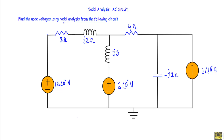To find node voltages using nodal analysis, we first identify the total number of nodes. We have three nodes total: node number one, node number two, and the ground, which is another node. When using nodal analysis we take the ground terminal as our reference node and assign node voltage V₀ equal to zero volts. With respect to this zero volt reference, the phasor voltage of node one is V1 and of node two is V2. All quantities are phasor quantities.